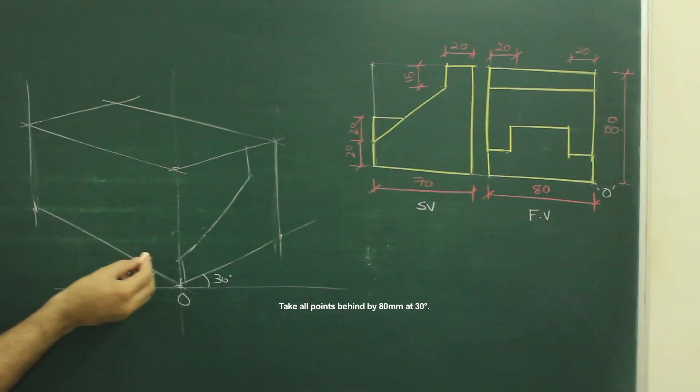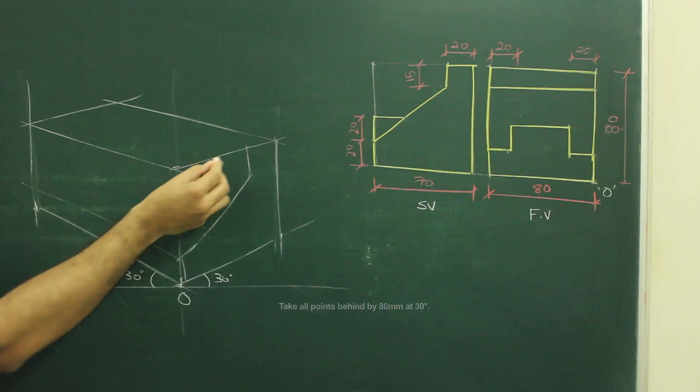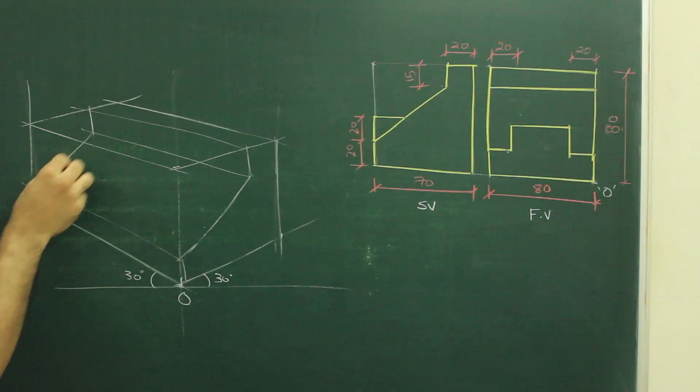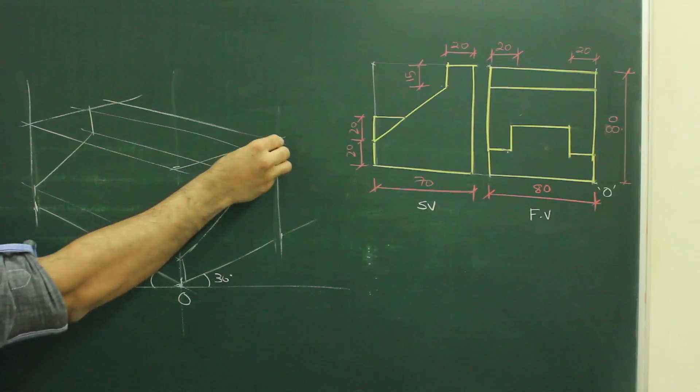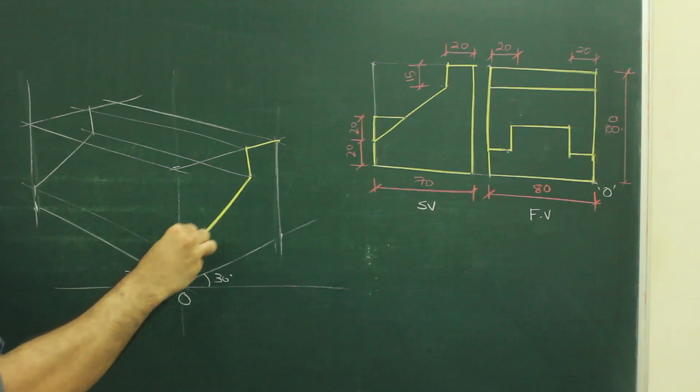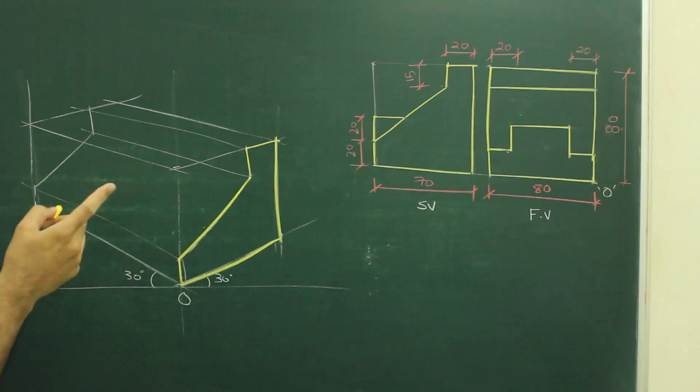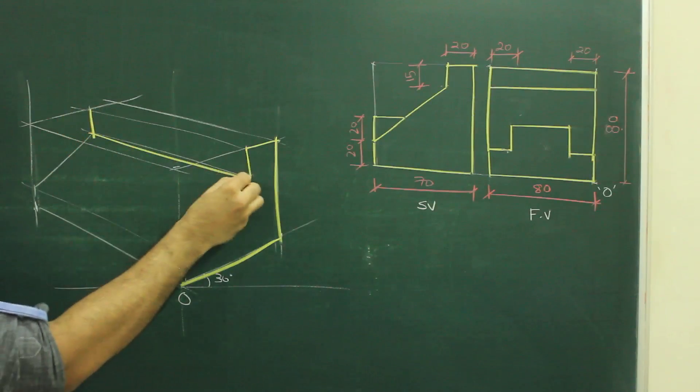So what I have drawn, I will go 80 behind and I will join this, right. So what I can do, I can draw this much dark, now I am sure this much is right, then I will and if I see front view, I can make out that this is also right.